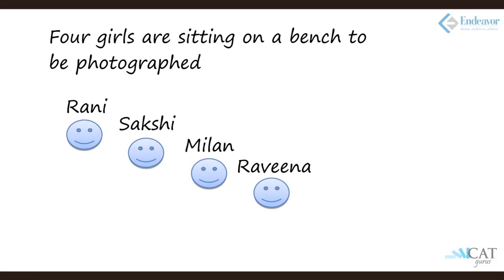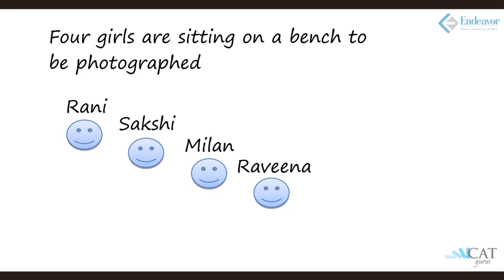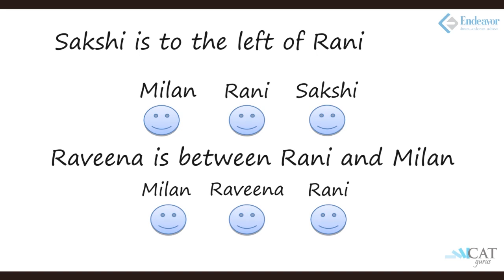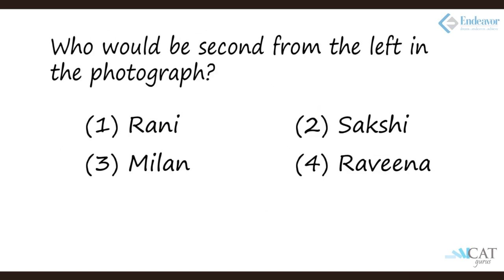Let's pick up examples to get the understanding clearer. First example: there are four girls sitting on a bench to be photographed. When the word 'photograph' comes in, there is a smaller trick to catch. There are four girls — Sakshi, Rani, Milan, and Ravina. The question asks who would be second from the left in the photograph. The catch is that in the photograph the arrangement appears reversed, turning 180 degrees — so if the seating is A B C D, the photograph shows D C B A.